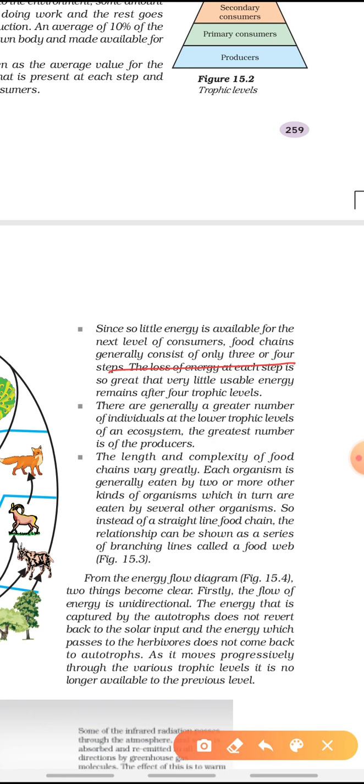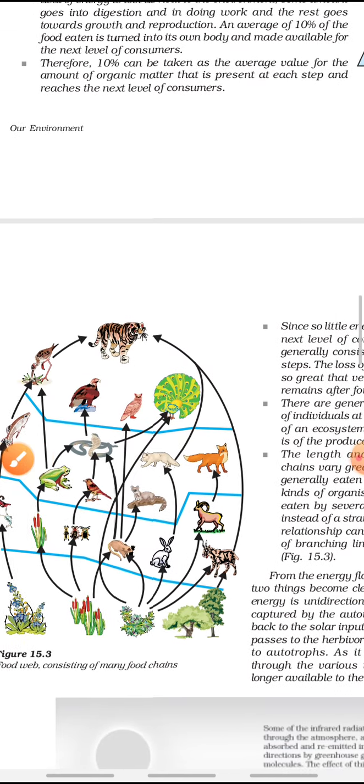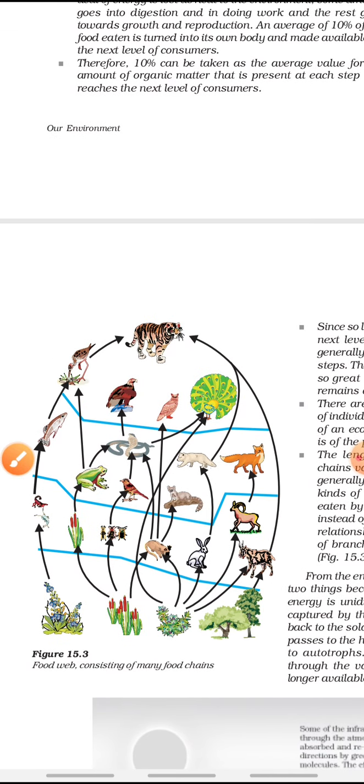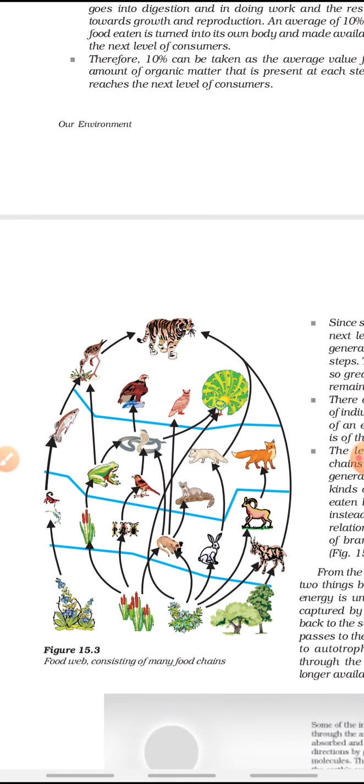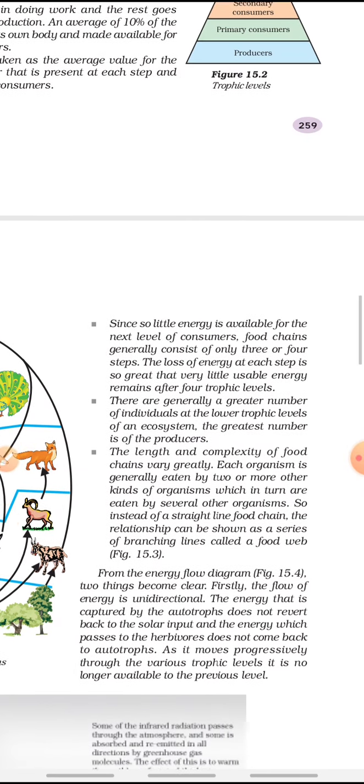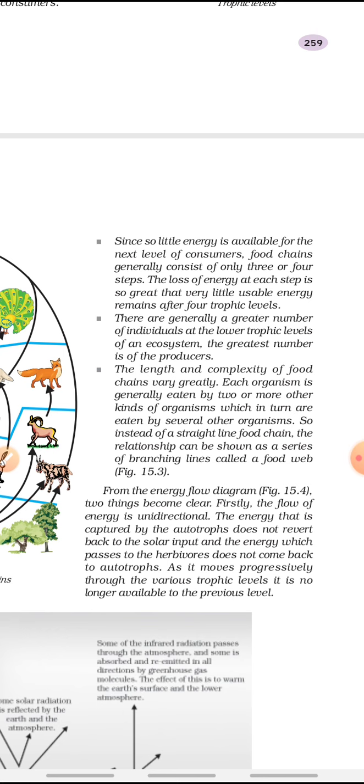The length and complexity of food chains vary greatly. Each organism is generally eaten by two or more other kinds of organisms, which in turn are eaten by several other organisms. When there is a network of food chains forming, look at this diagram. You can see how one food chain is interconnected with another food chain. This is known as a food web. When two or more food chains get interconnected with each other, they form a food web.